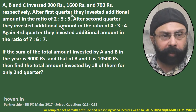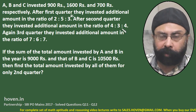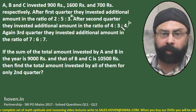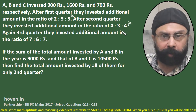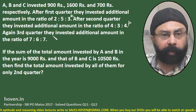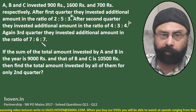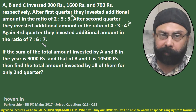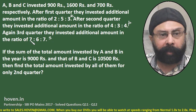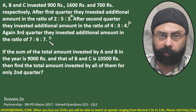After the second quarter, they invested an additional amount in the ratio 4:3:4 — let us write that as 4p, 3p, 4p. And again for the third quarter, they invested an additional amount in the ratio 7:6:7, so we can say they invested 7s, 6s and 7s for the third quarter.